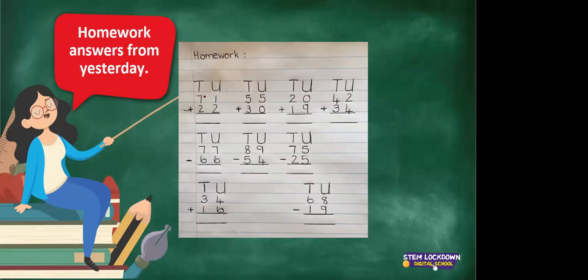Tens and units: when we plus 71 plus 22, we do the units first. We say 1 plus 2 equals 3, and 7 plus 2 equals 9, so the answer is 93. Now 55 plus 30: 5 plus 0 equals 5, and 5 plus 3 equals 8.